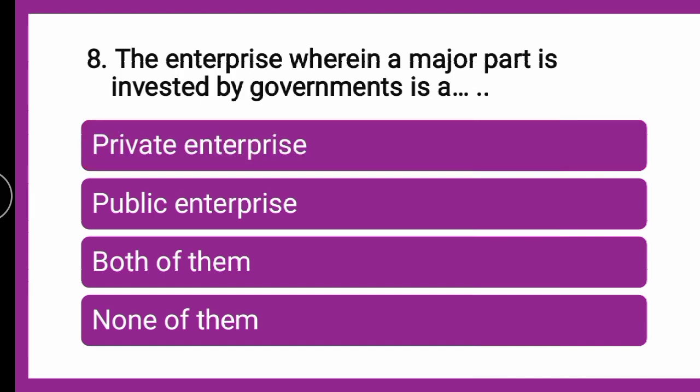Next question: The enterprise wherein a major part is invested by the government is DASH — whether private enterprise, public enterprise, both of them, or none of them. The correct answer is public enterprise. The enterprise wherein the major part is invested by the government is public enterprise.